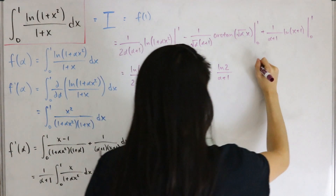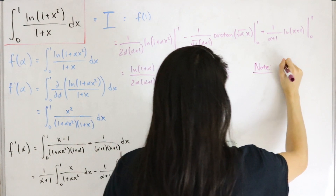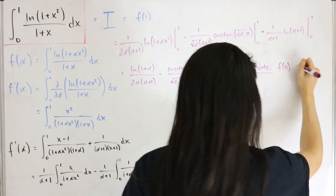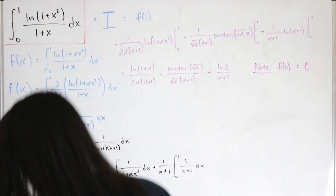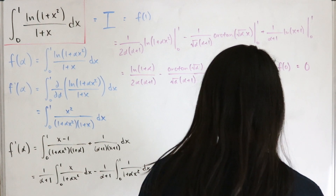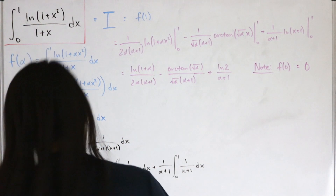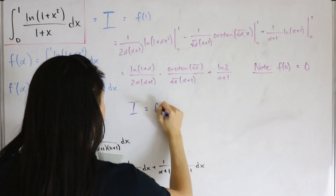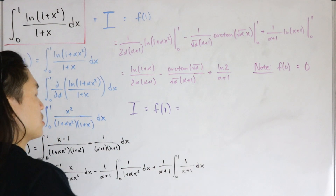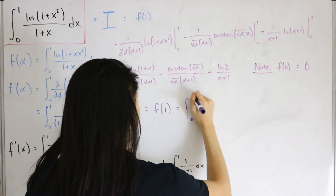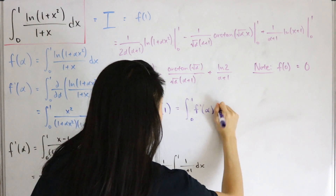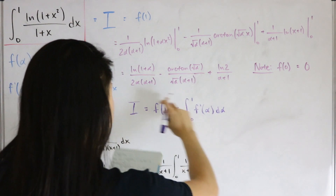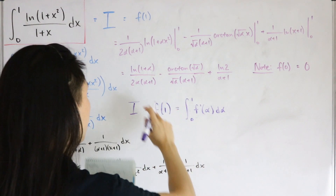Notably, if we plug in alpha equals zero, f of zero equals zero. Now, capital I equals f of one, which is the same as taking the integral from zero to one of f prime of alpha, d alpha. So we need to integrate all of the expression we just found with respect to alpha.